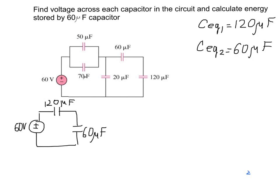Now that we've found the two equivalent capacitors, we can replace the original circuit with a circuit of only two capacitors in series with a total voltage of 60 volts. Using the capacitive voltage divider rule, the voltage across the 120 microfarad equivalent capacitor is (60 / (120 + 60)) × 60 volts, which gives 20 volts.